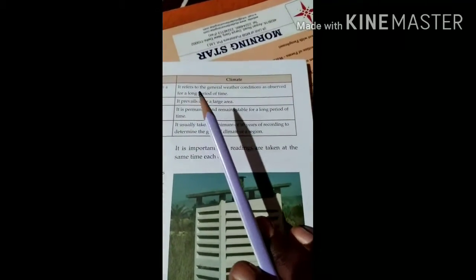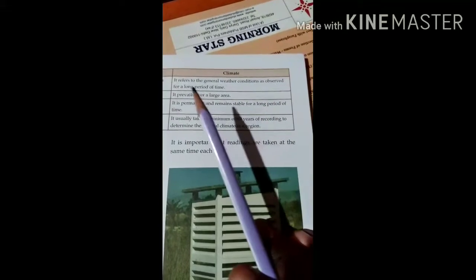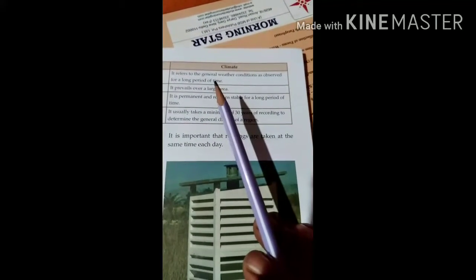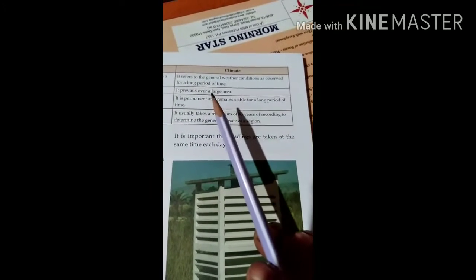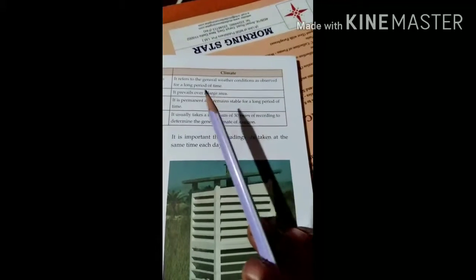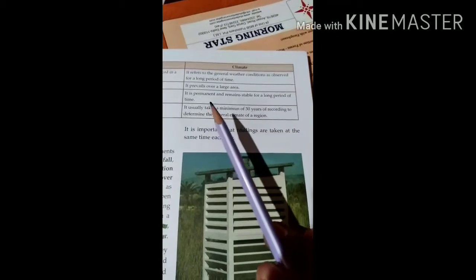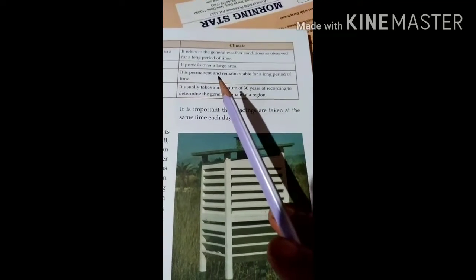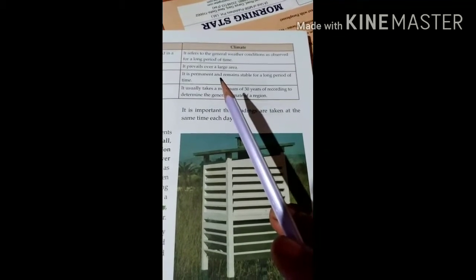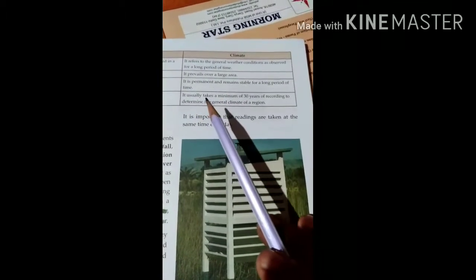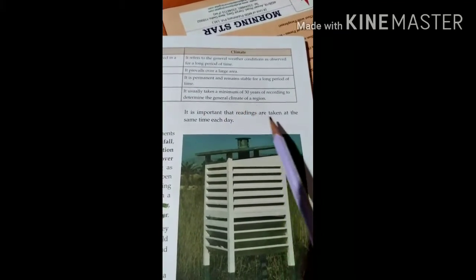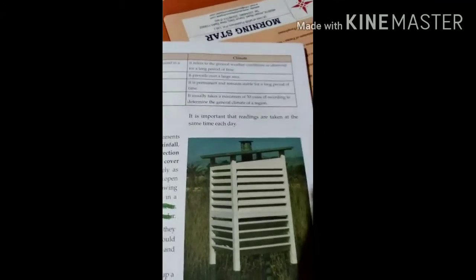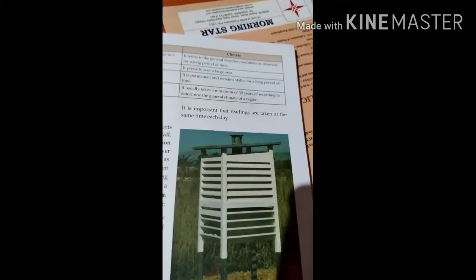Climate refers to the general weather conditions as observed for a long period of time. Climate remains in a particular area for a long period of time. It prevails over a large area and covers a large region. It is permanent and remains stable for a long period of time. Climate remains for long periods as a permanent condition. It usually takes a minimum of 30 years of recording to determine the general climate of a region. In a particular area, the climate remains almost more than 30 to 40 years.